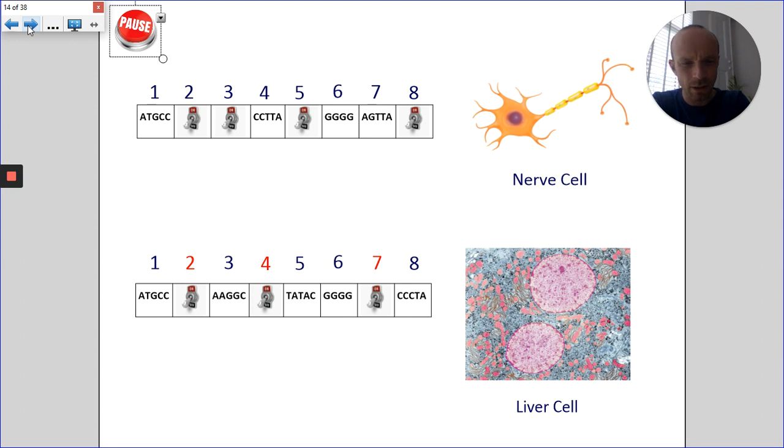and at the bottom, we've got a liver cell, again, a specialized cell. Now, at the top, the combination of the genes that are switched off is different to the combination of genes that are switched off in the liver cell.